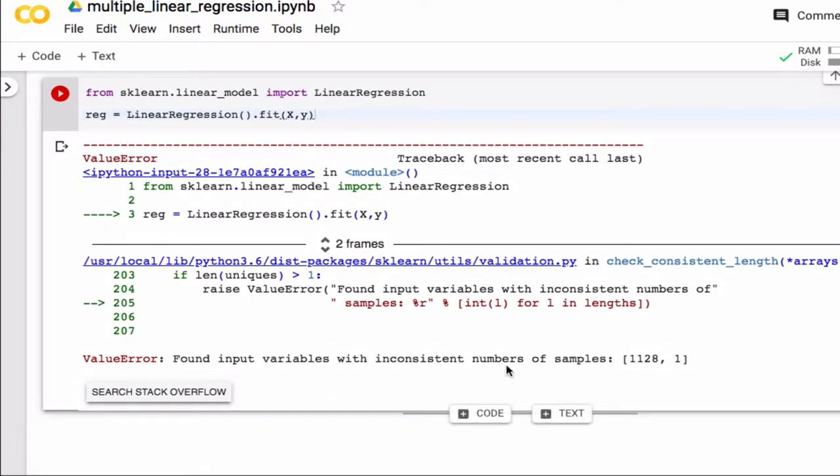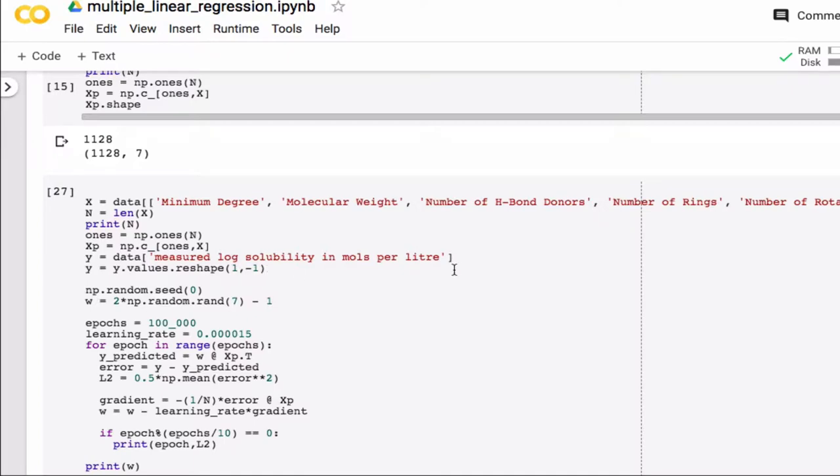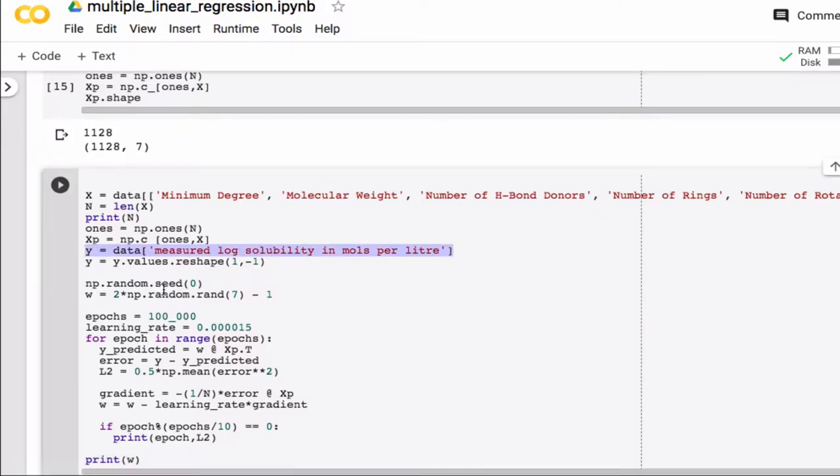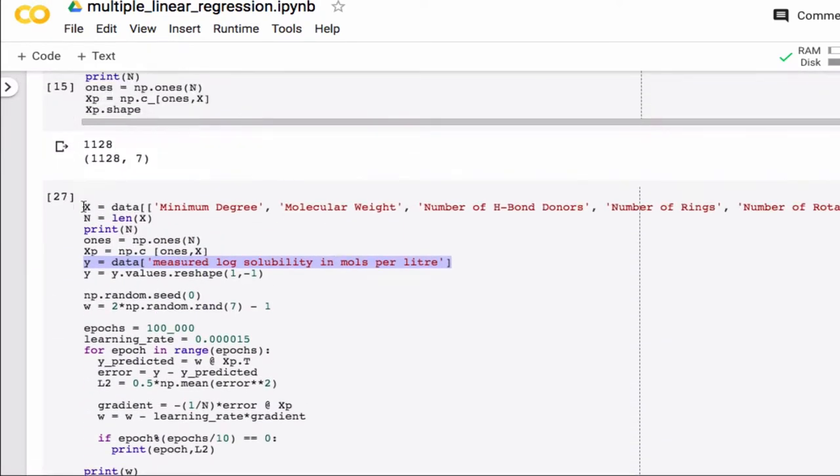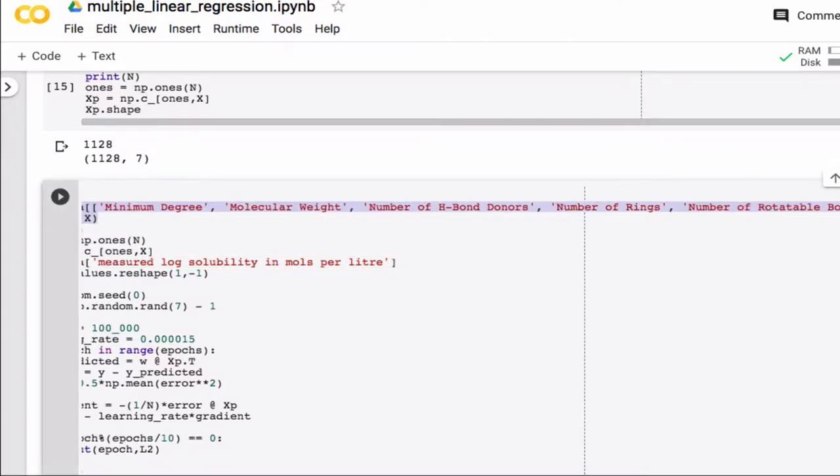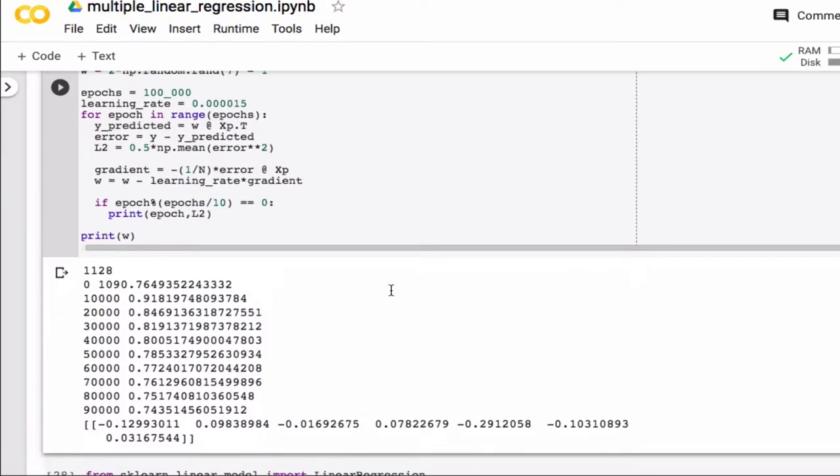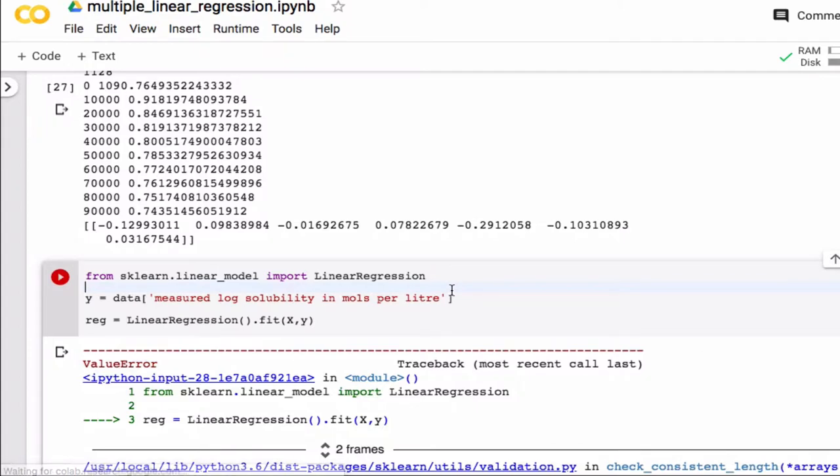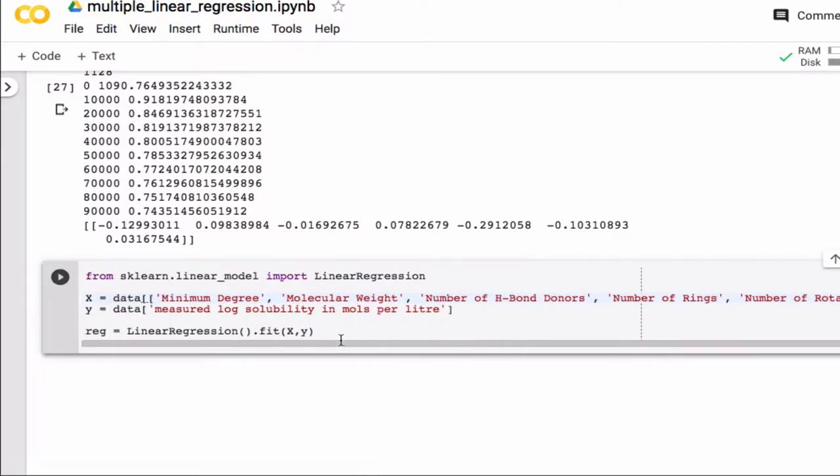Okay, so it complains about this, which is clearly the y, because there's only one column. So maybe it doesn't like, maybe it's not so happy with this. So let's actually give it both, or let's recompute both the x and the y. Okay, no error messages. That's great.